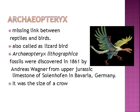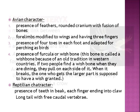Archaeopteryx is the missing link between reptiles and birds, also called the lizard bird. Its fossils — Archaeopteryx lithographica — were discovered in 1861 by Andreas Wagner from Upper Jurassic limestone of Solenhofen in Bavaria, Germany. It was the size of a crow. Avian characters: presence of feathers, rounded cranium with fusion of bones, four limbs modified to wings with three fingers, four toes in each foot adapted for perching, and presence of furcula or wishbone.